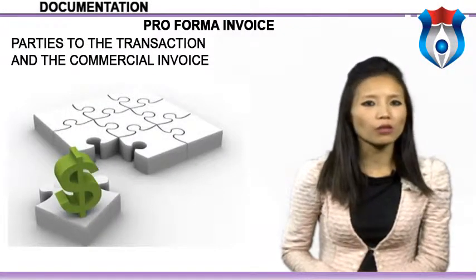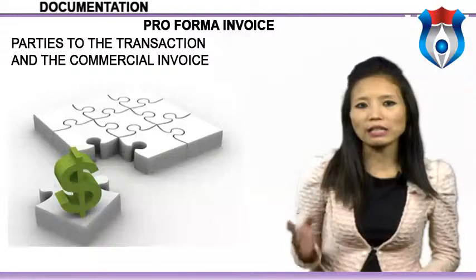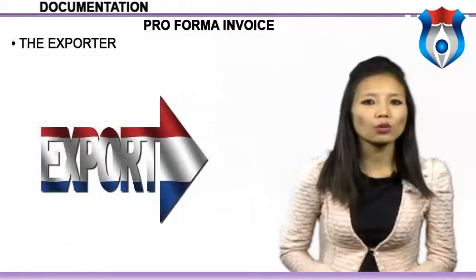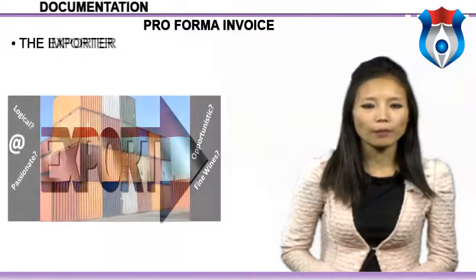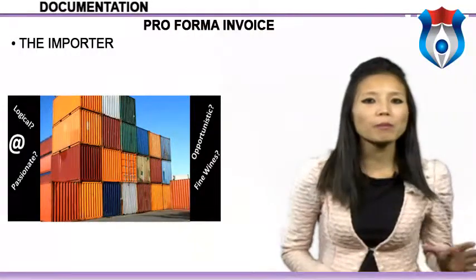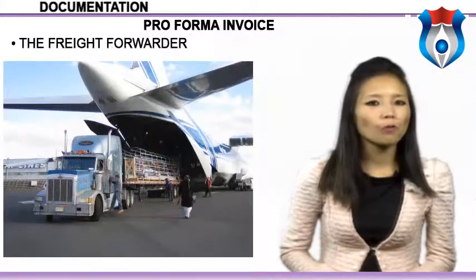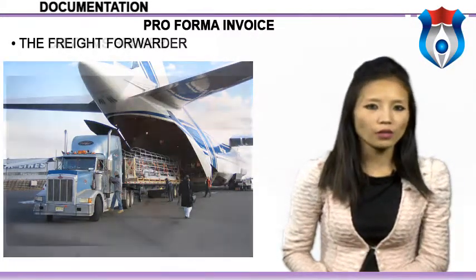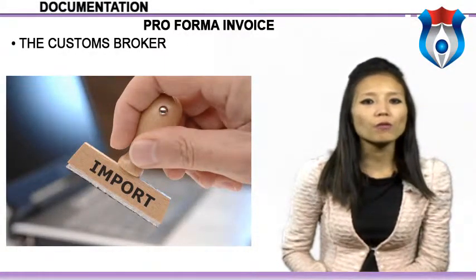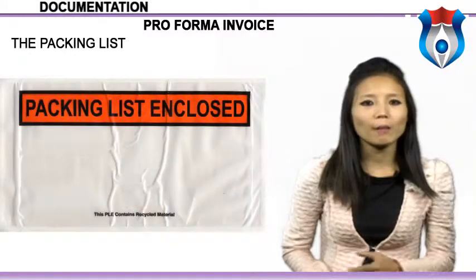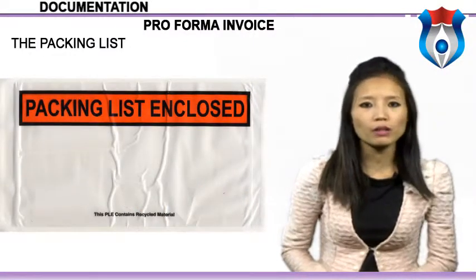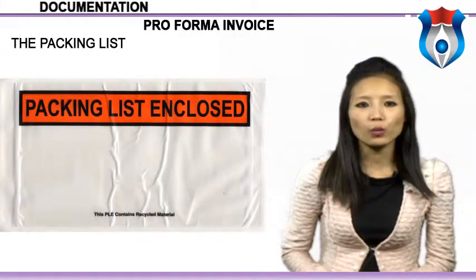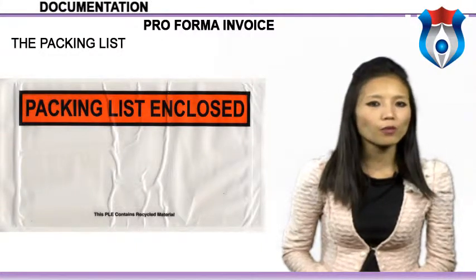The parties involved in the export transaction that require an original or copy of the commercial invoice include: the exporter, as the record of shipment and payment mechanism; the importer, also as record of shipment and payment mechanism; the freight forwarder, who uses the invoice in part to prepare the documentation they provide as part of their services; and the customs broker, who uses the invoice to prepare the customs entry forms at the point of import. Most duties are applied on an ad valorem basis, and the commercial invoice is key for those.